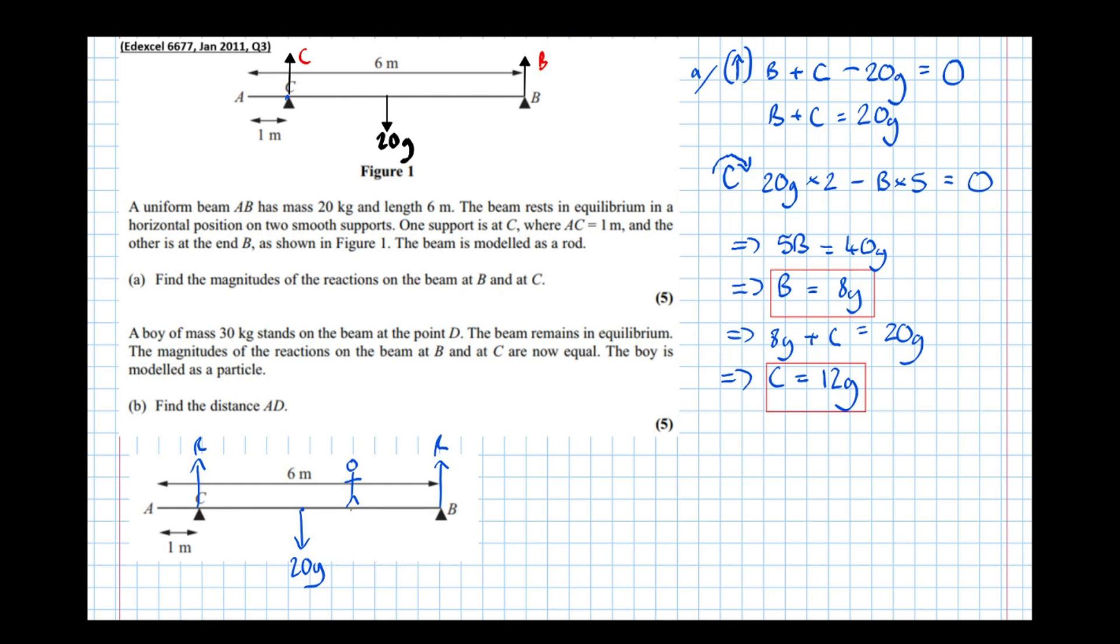At point D, 30G. And let's call this point D on the bar, and the point D lies a distance which I'm going to call D from point A. So let's call that distance D.